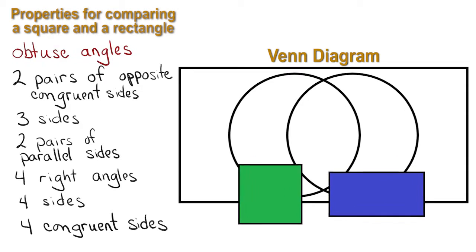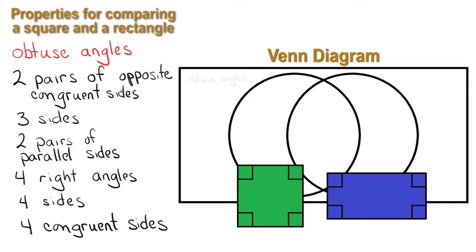Let's start at the beginning of the list. Which shapes have obtuse angles? We can see that neither the square nor the rectangle have obtuse angles, and in fact, they both have right angles. Obtuse angles will be written outside the diagram, but inside the big rectangle surrounding the Venn diagram.